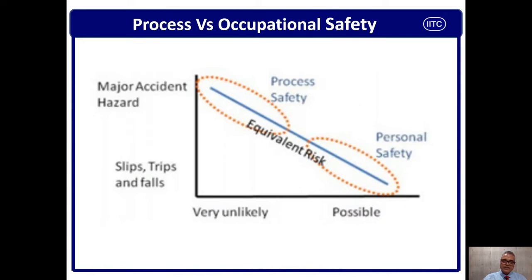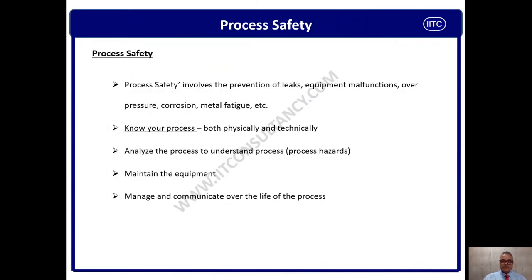This slide is very useful for understanding the definition and difference between process safety and occupational safety. Process safety involves the prevention of leaks, equipment malfunction, overpressure, and corrosion. It deals with process characteristics such as pressure, temperature, flow, and level. The essential elements require us to know processes both physically and technically to understand complete process safety management.